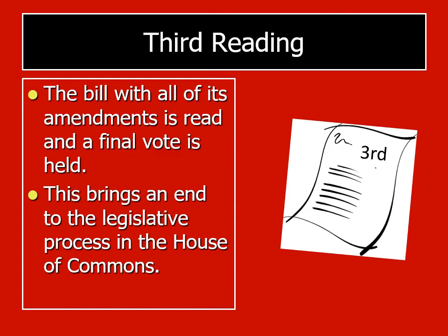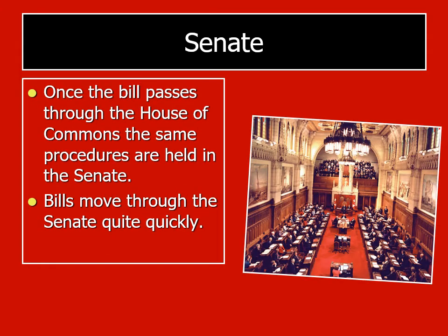If the bill is passed, it moves on to the Senate — also known as the Chamber of Sober Second Thought. The Senate receives the bill after it has been passed in the House of Commons, and the same procedures are held in the Senate. However, bills tend to move more quickly through the Senate. This is the result of Senators being appointed and not democratically elected. Throughout Canadian history, there has been much debate on Senate reform.